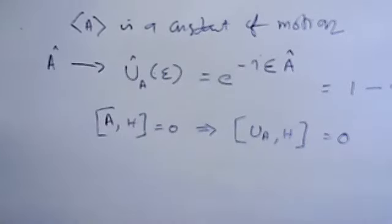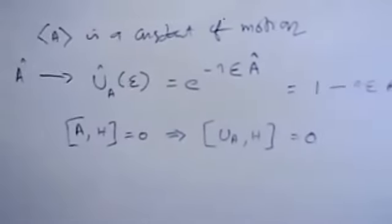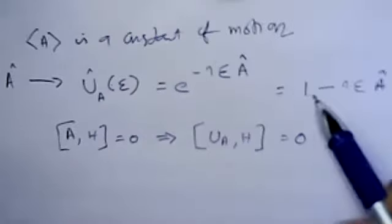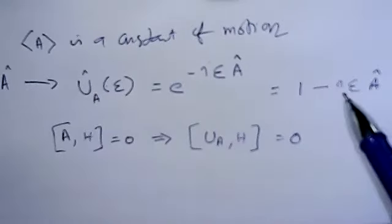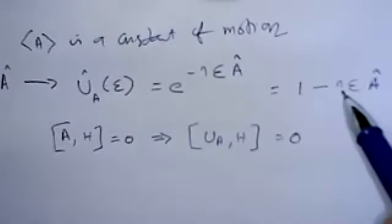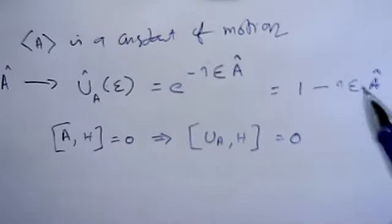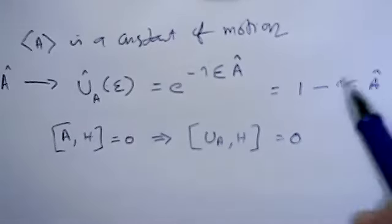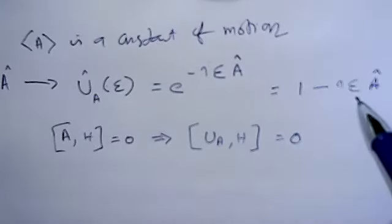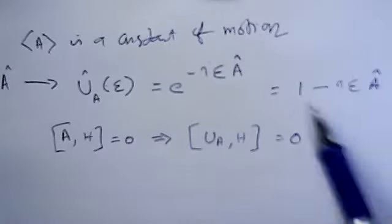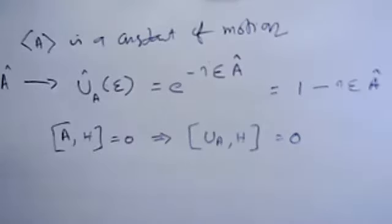This can be written as 1 minus i epsilon A. Unitary means it is very near to unity, almost 1. The difference is only minus i epsilon A. So this is almost very close to 1 because epsilon is very small. Instead of U_A, you can write 1 minus i epsilon A, neglecting higher order terms.